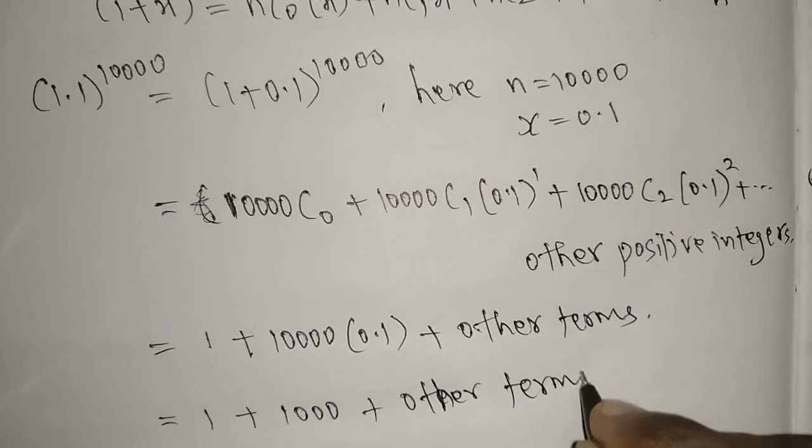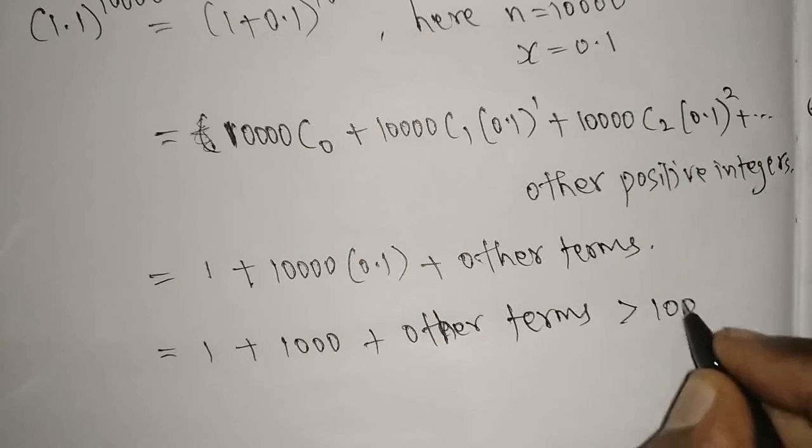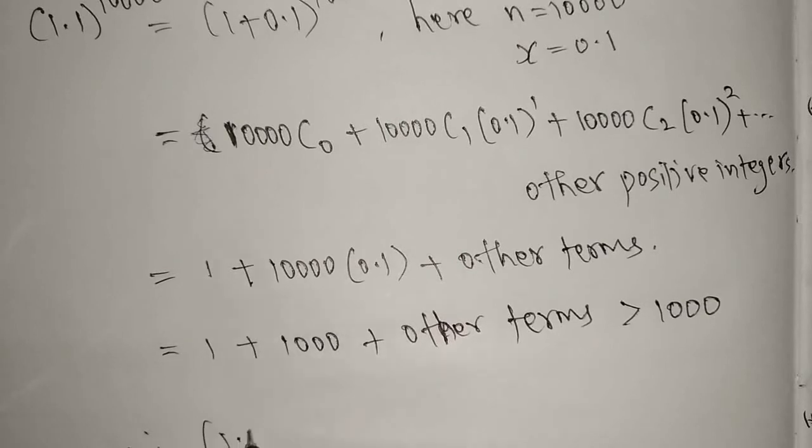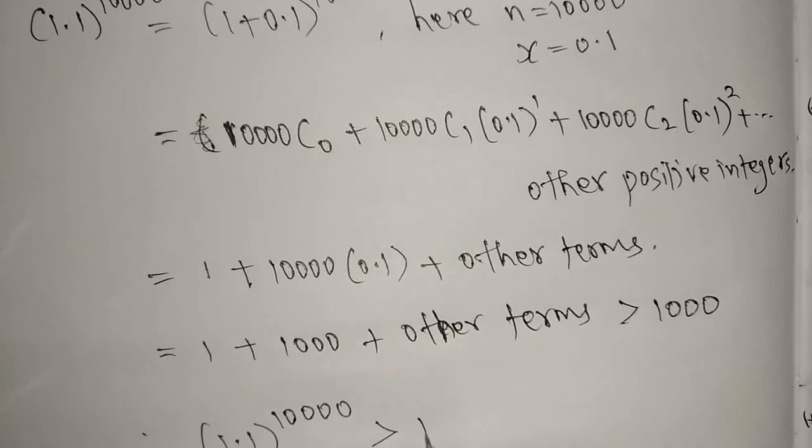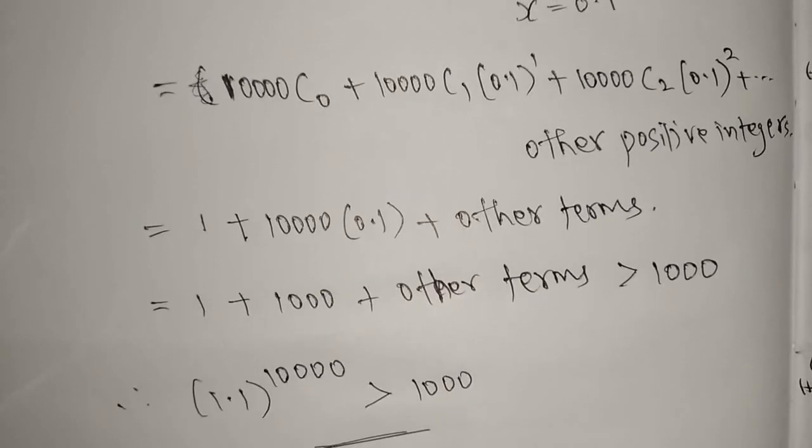So what we are getting, the final answer: therefore (1.1)^10000 is definitely greater than 1000. Hence we found which is the greater one. This is greater than 1000. I hope you understand this.